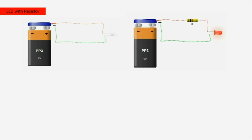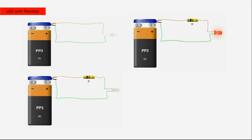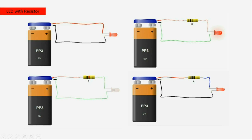To limit the current passing through the LED, we must use a resistor. A resistor is used to reduce the current going into the LED, but we must choose the correct resistor value. If the resistor is too large, the current is small and the LED will be dim. If the resistor value is too small, the current is too high and the LED will explode.